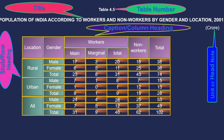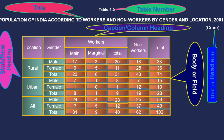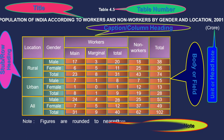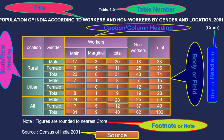The brown-colored section indicates the body or field of the table, which is the most important part. Each cell in the table is referred to as a 'cell'. The note reads: 'Figures are rounded to nearest crore' — this is the footnote. 'Census of India 2001' is the source. These are the various parts of the table.